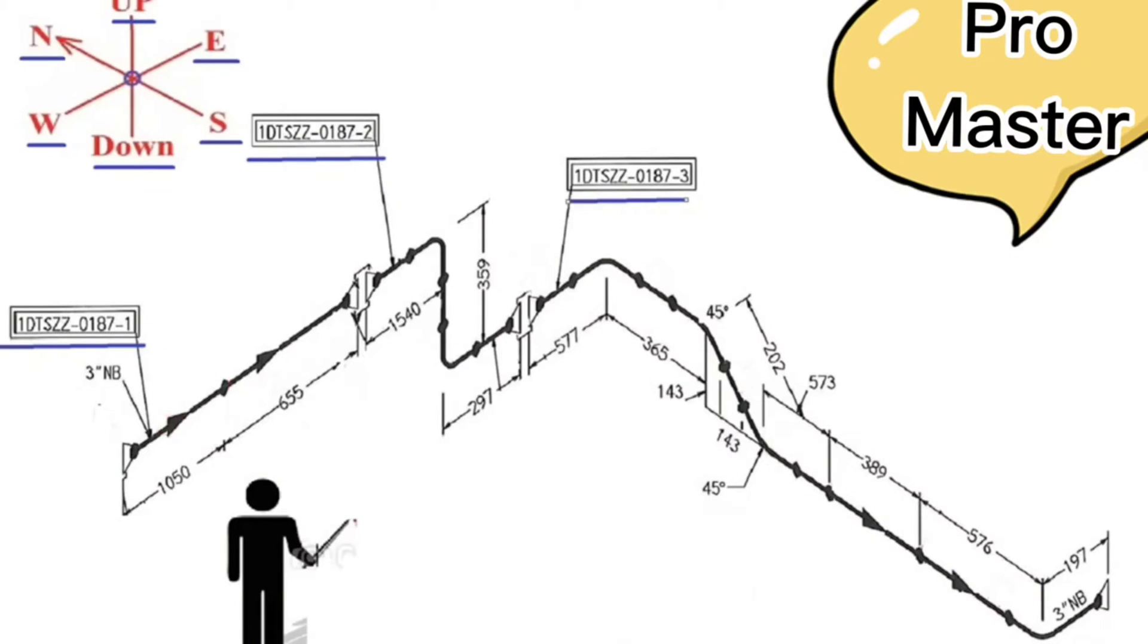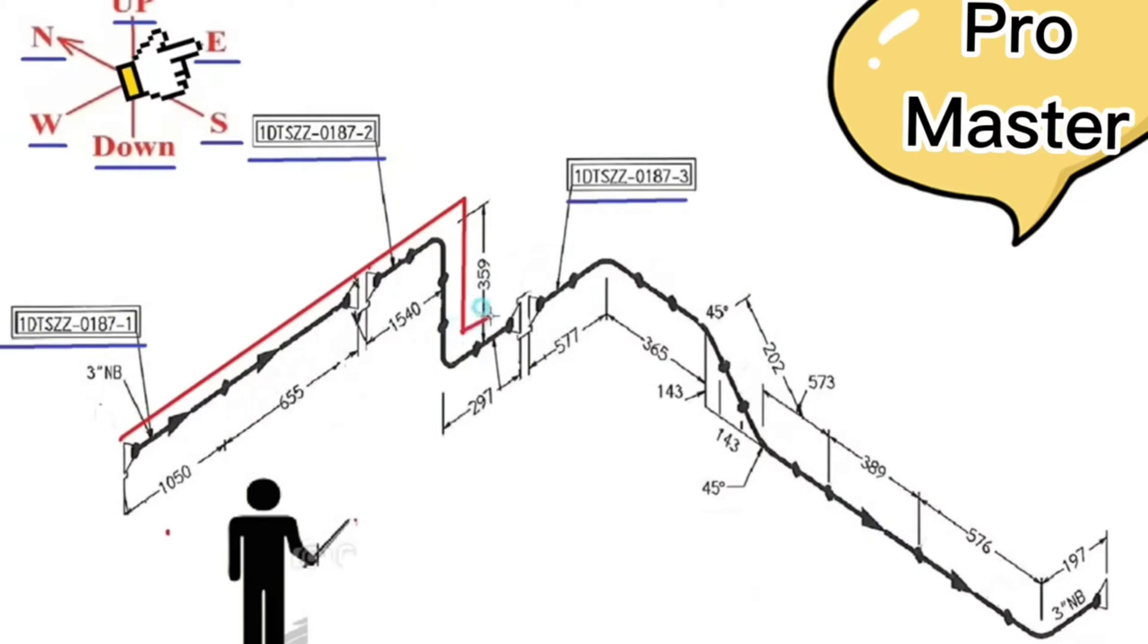We will start reading the pipe isometric from this point because the direction of the arrow on the pipe drawing is in this direction. The pipe travel starts from this point to the east direction. Then the pipe travels to the down. Then pipe travels to the east again.